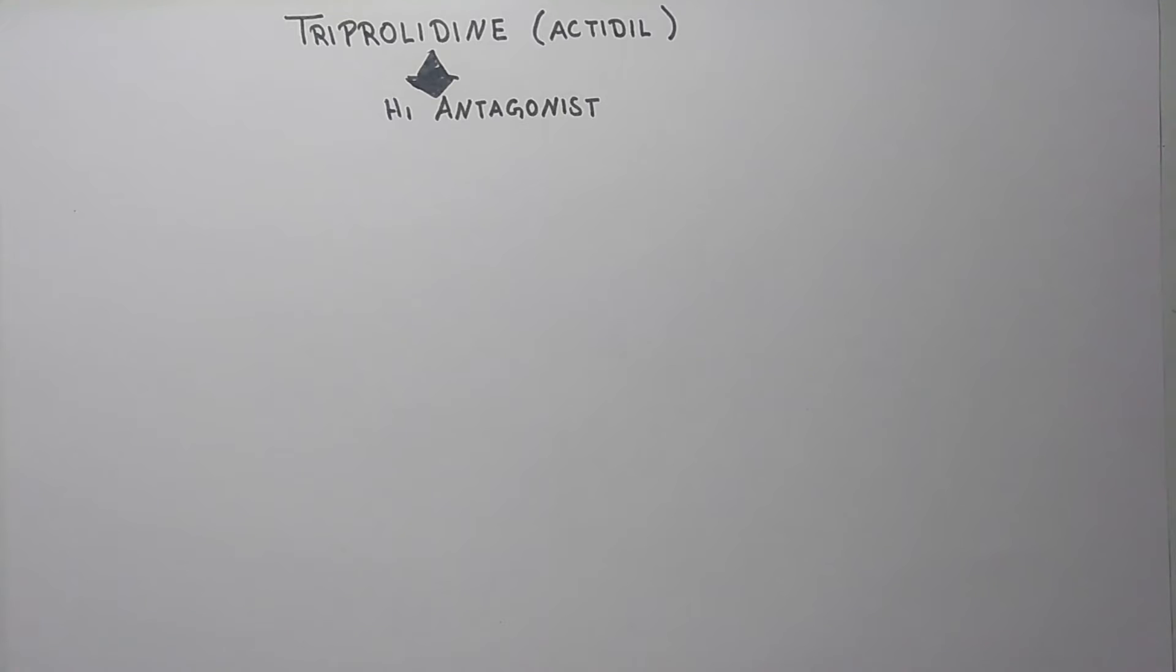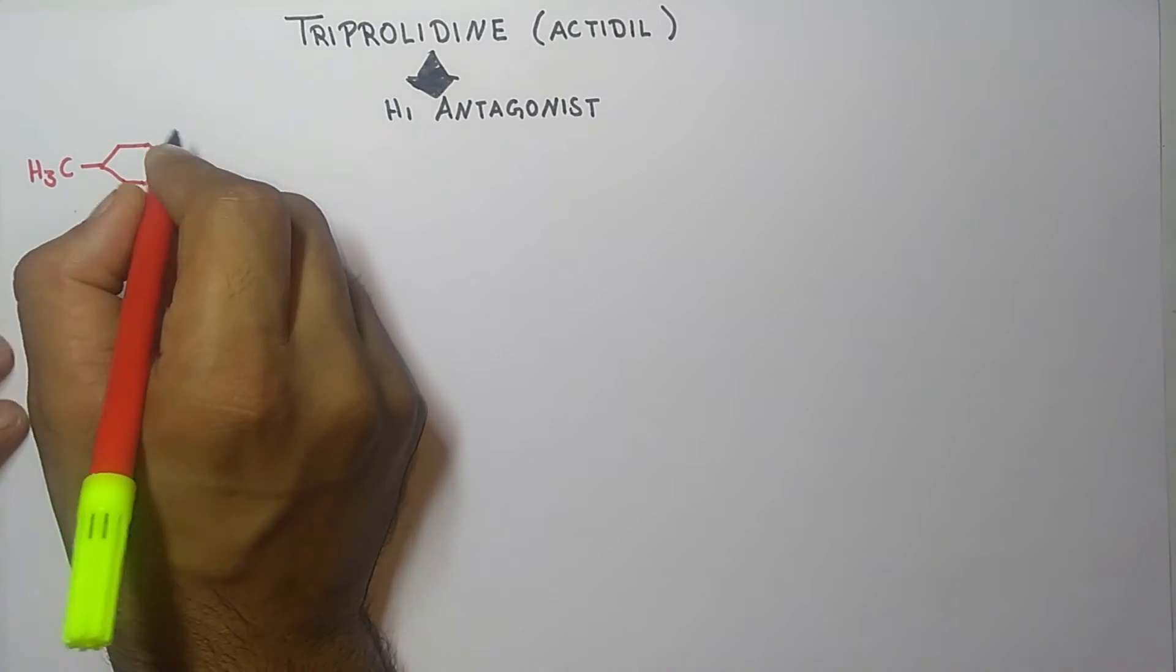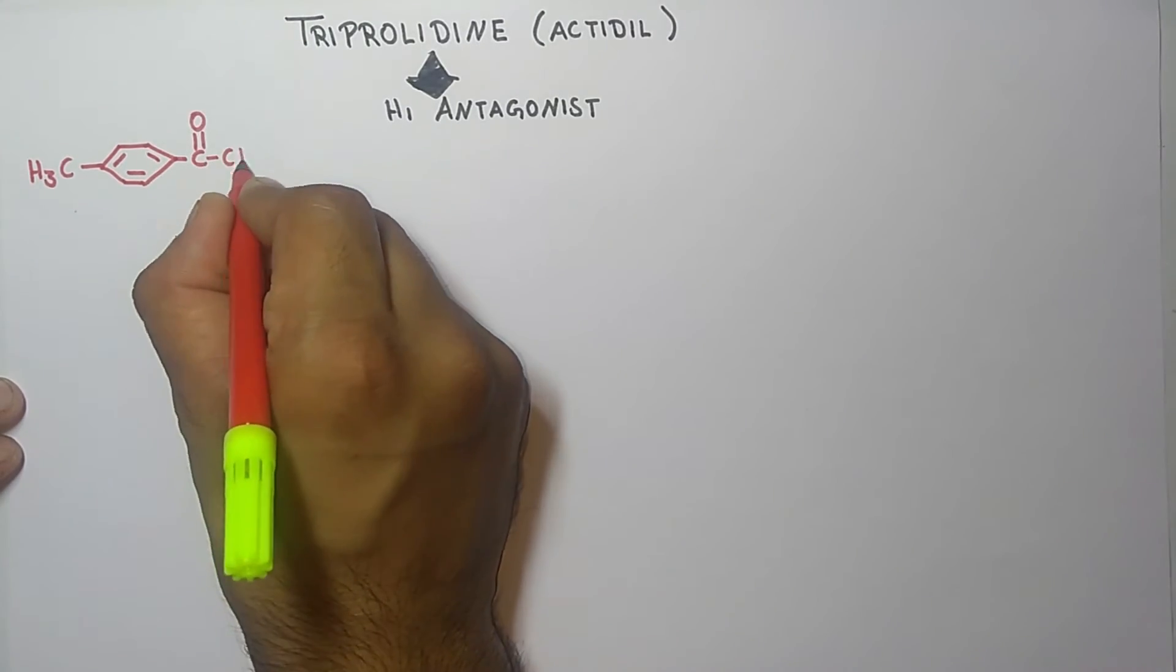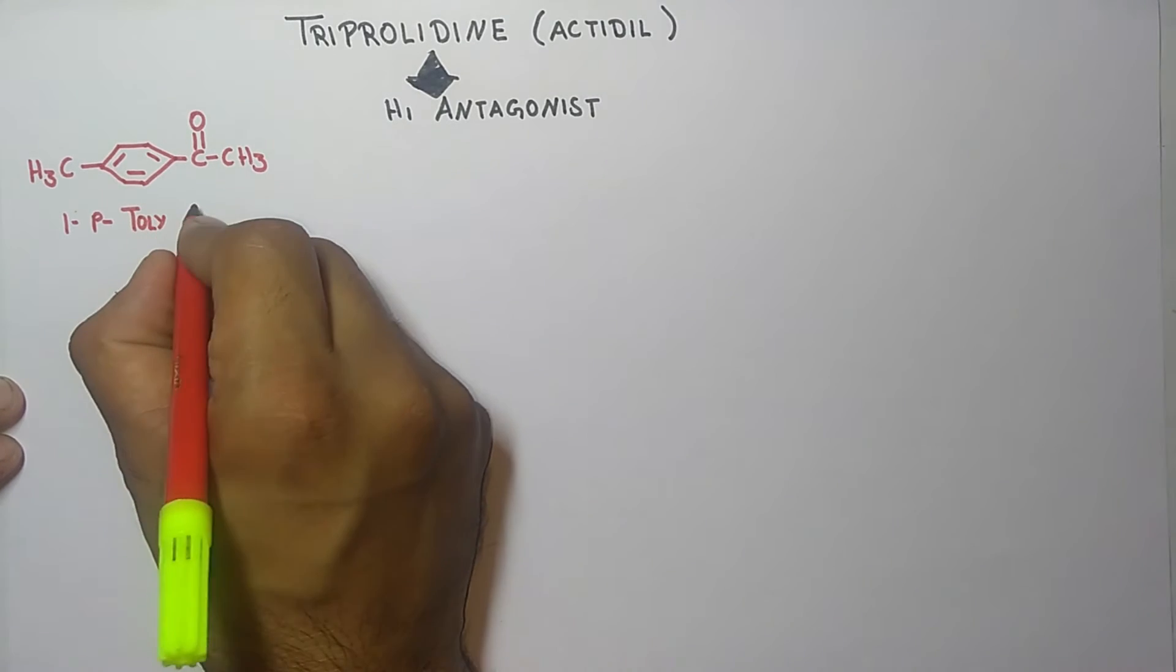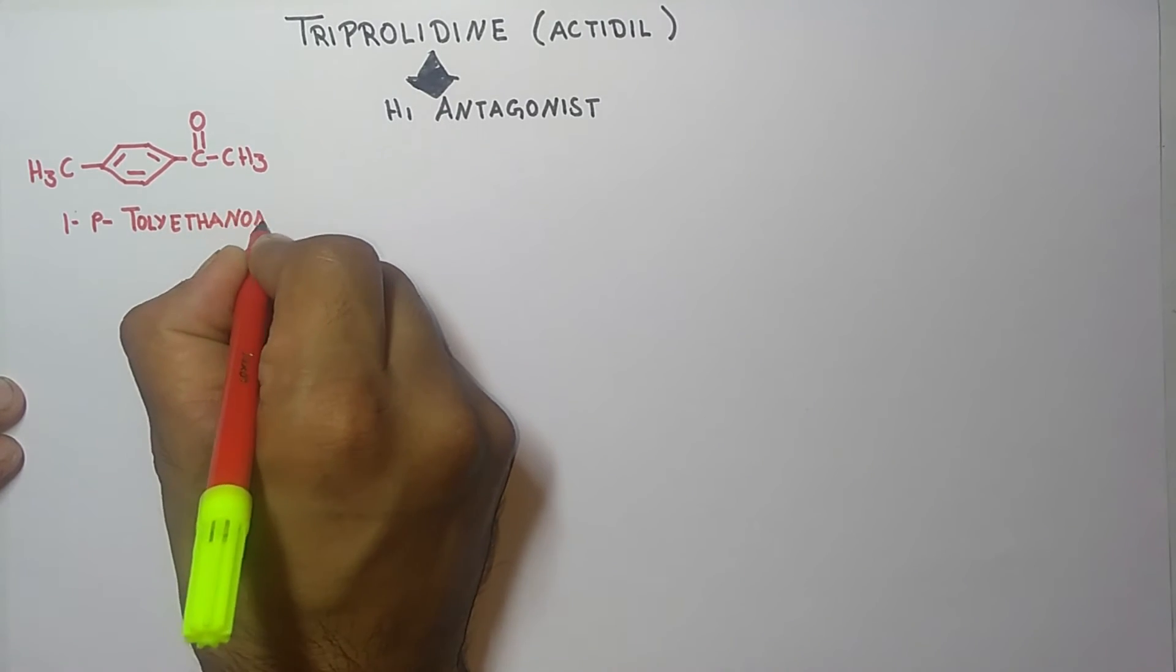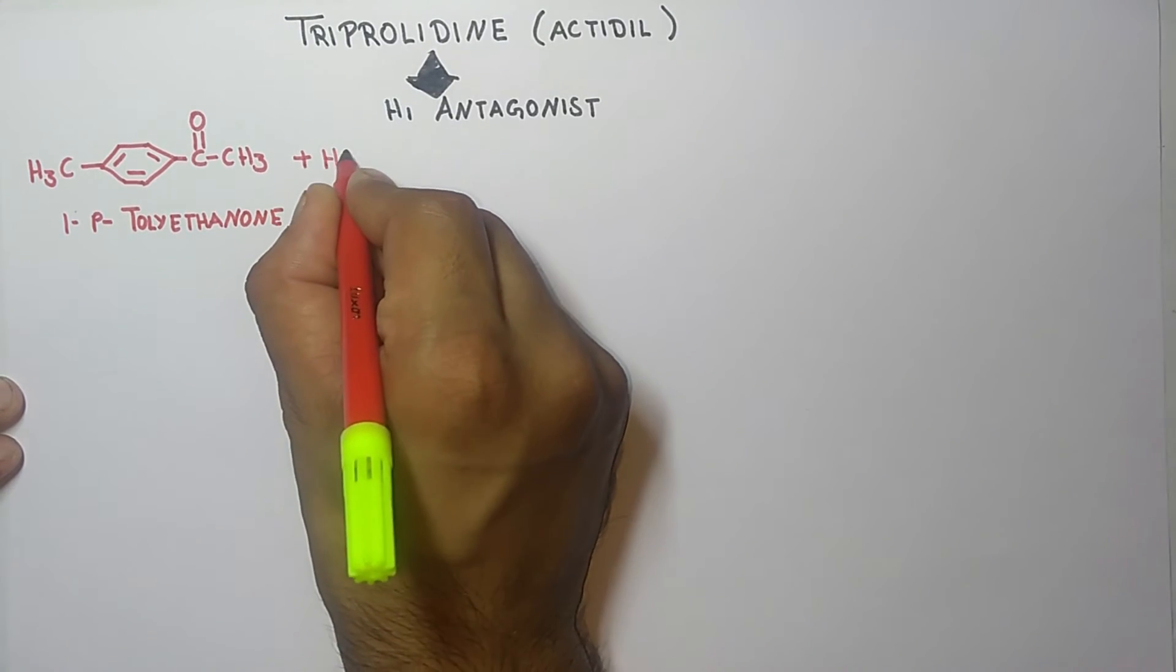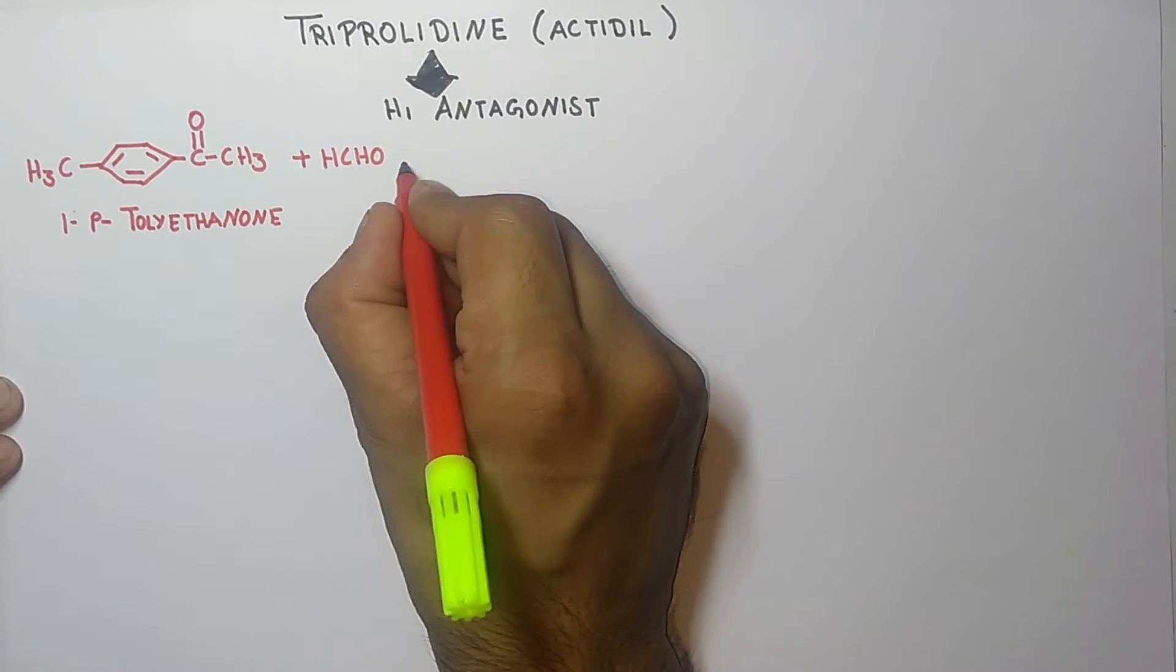We need the starting product for the synthesis of triprolidine, and that is 1-para-tolyl-ethanone plus HCHO, that is an aldehyde, with pyrrolidine.